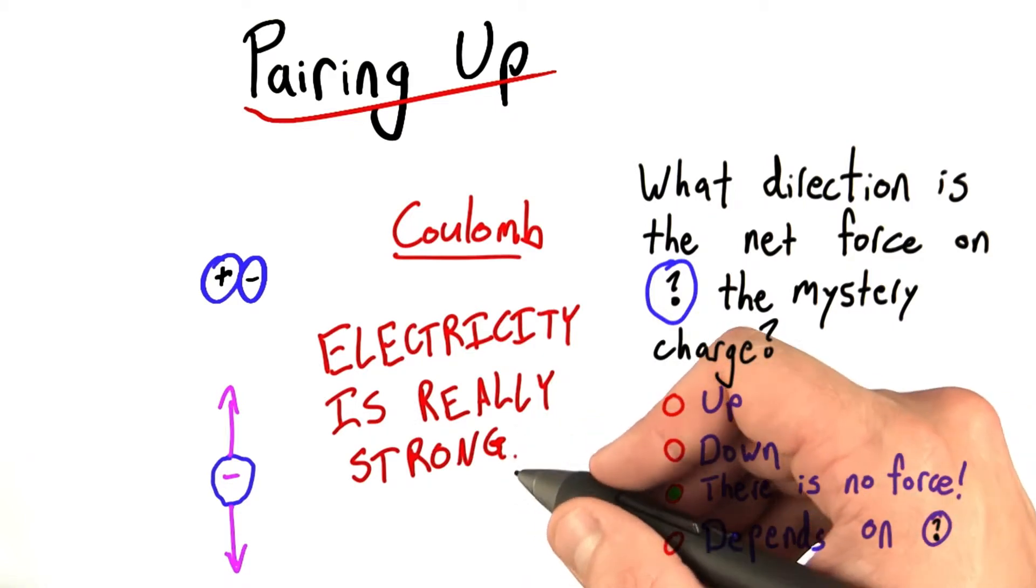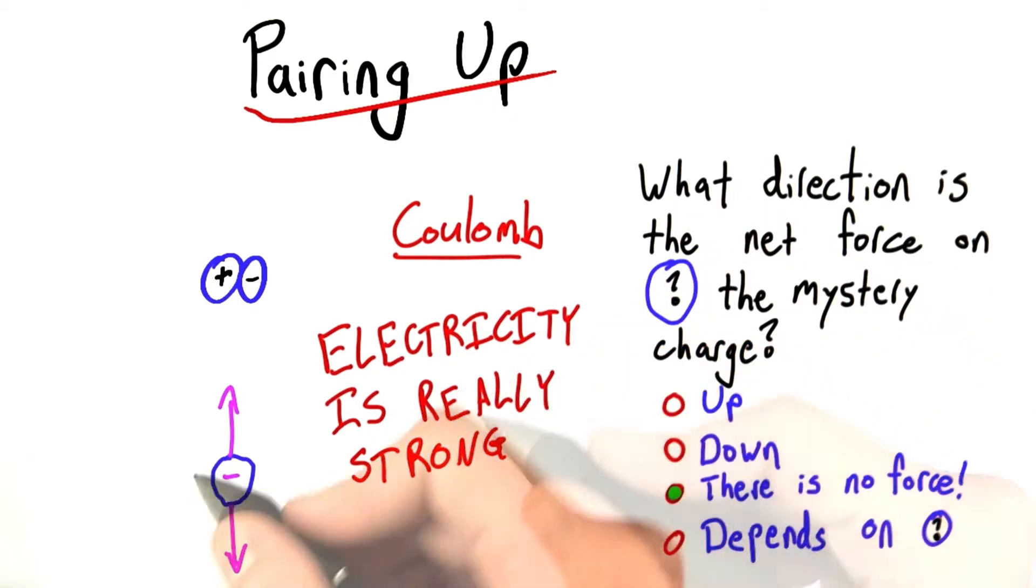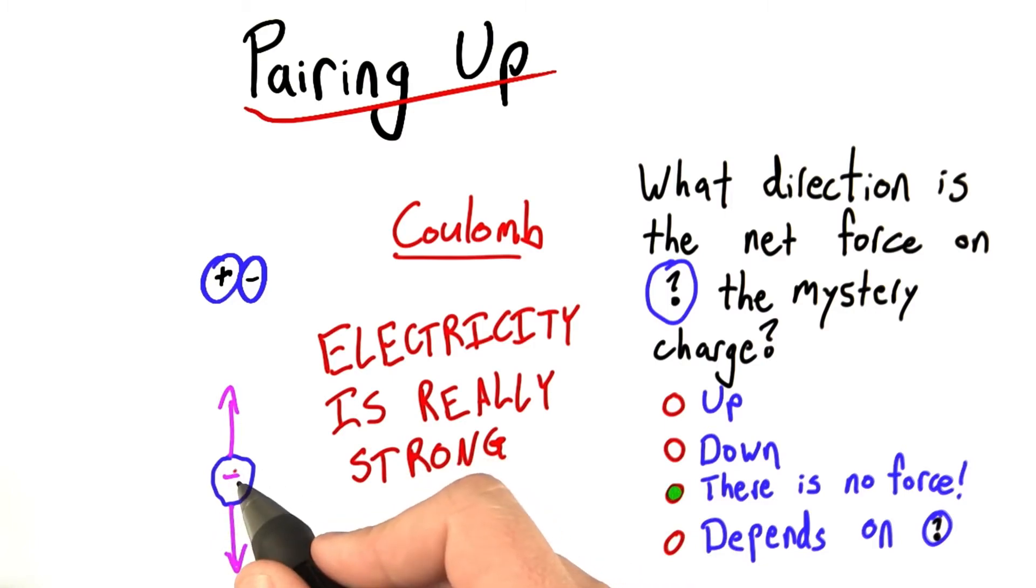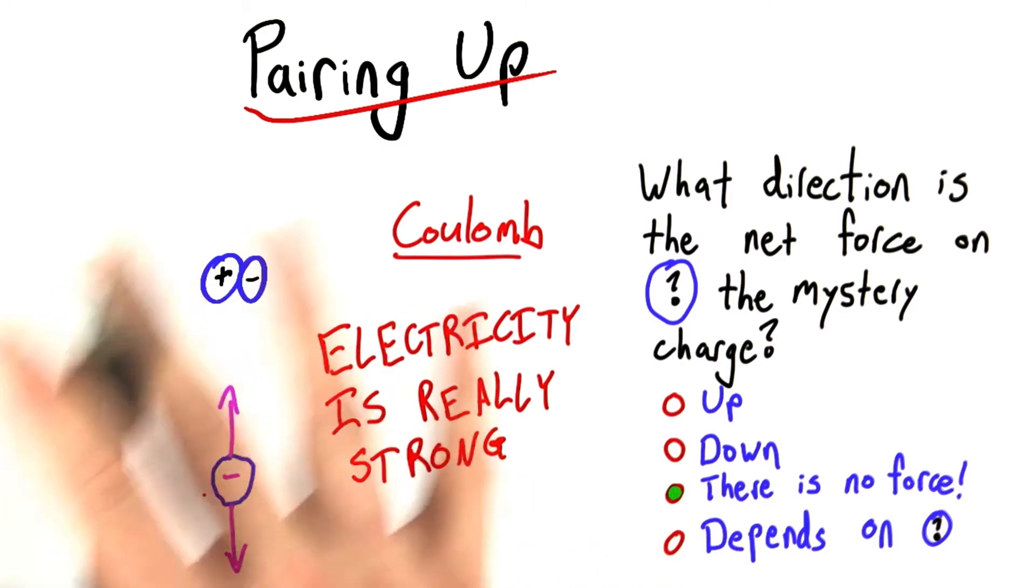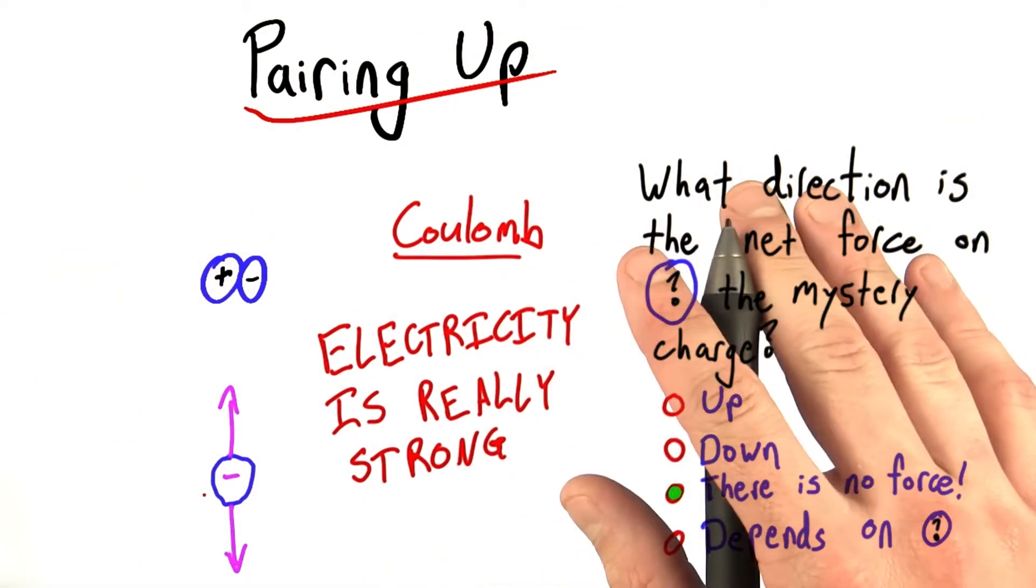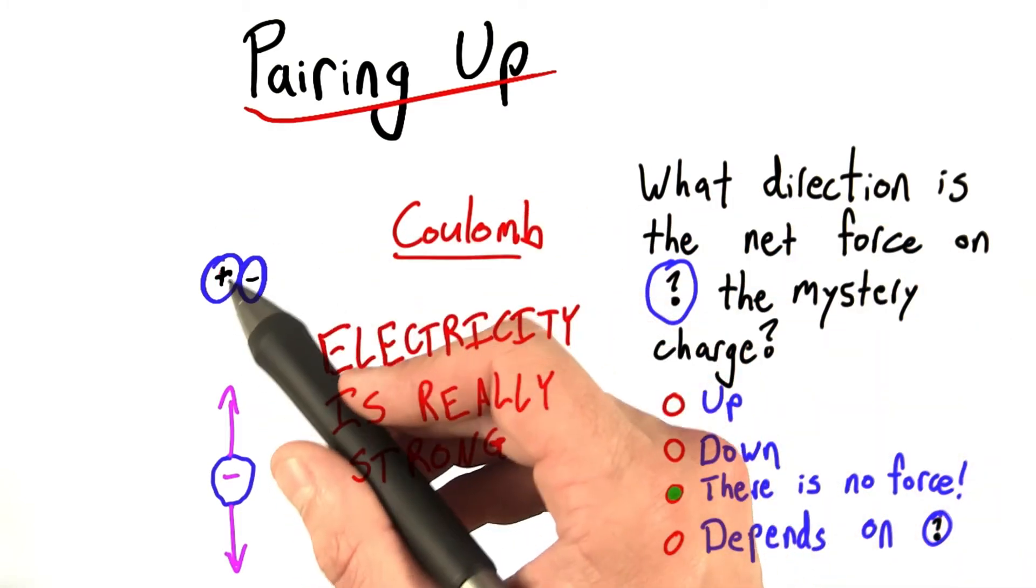And what that means is if this guy were to exist, this lone negative charge, and somewhere off in the distance there was a lonely positive charge, they would find each other and they would pair off.